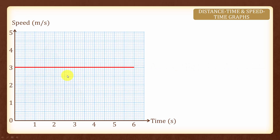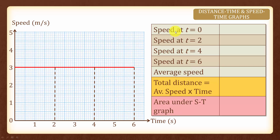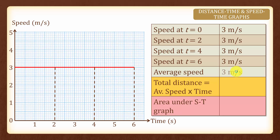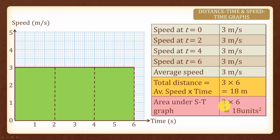Here we have a speed time graph and the speed time graph here is a horizontal line. Now let us find out what is the speed at t equals to 0, t equals to 2, t equals to 4 and t equals to 6. It is at a constant speed and therefore the speed is 3 m per second. To find the average speed, we will add up these 4 numbers and divide by 4 to give us 3 m per second. Now total distance is equal to the average speed times time, and therefore we have the average speed to be 3 m per second and the time is 6 seconds, so we have 3 times 6 to give us 18 meters. Now the area under this speed time graph is a rectangle and hence the area is simply 3 times 6 to give us 18 square units.